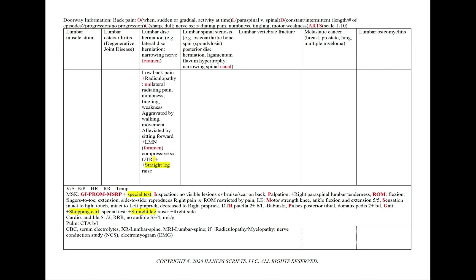In lumbar disc herniation, particularly a lateral disc herniation, that will result in narrowing of the nerve at the foramen. We'll have low back pain and a positive radiculopathy — unilateral radiating pain, numbness, tingling, or motor weakness. It can be aggravated by walking or movement and alleviated by sitting forward. Since the herniation impacts the nerve at the foramen, we could see lower motor neuron findings including delayed deep tendon reflexes and a positive straight leg raise, as we'll see in our physical exam.